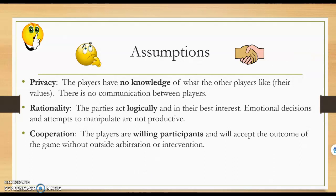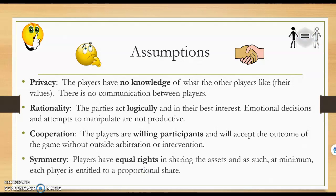The third assumption is the cooperation assumption, which assumes that players are willing participants and will accept the outcome without outside arbitration or intervention. Cooperation assumes I'm not going to go behind our method of division and sue you because I'm unhappy with my share. The last assumption is symmetry — that players have equal rights in sharing the assets. An example of where that might be violated is if a brother cared for the parents in their later years and is therefore entitled to more of the estate than the sister, which would violate the symmetry assumption.